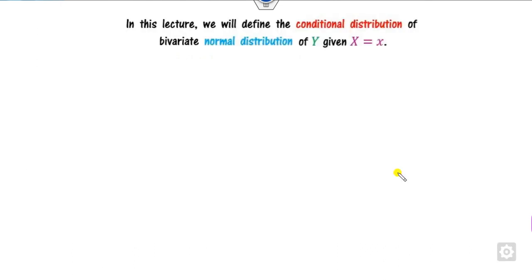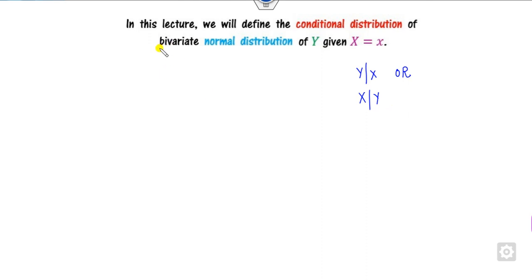The objective is to identify the conditional distribution of y given x, and also the conditional distribution of x given y. Before that, we discussed in the last class what the bivariate normal distribution is — you can watch my last lecture for that.